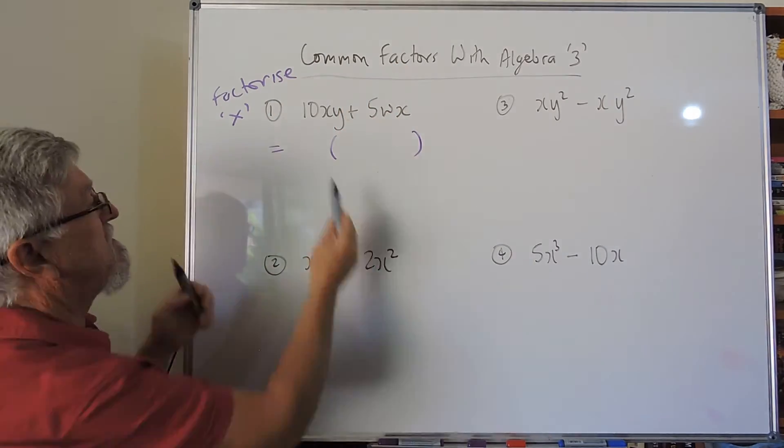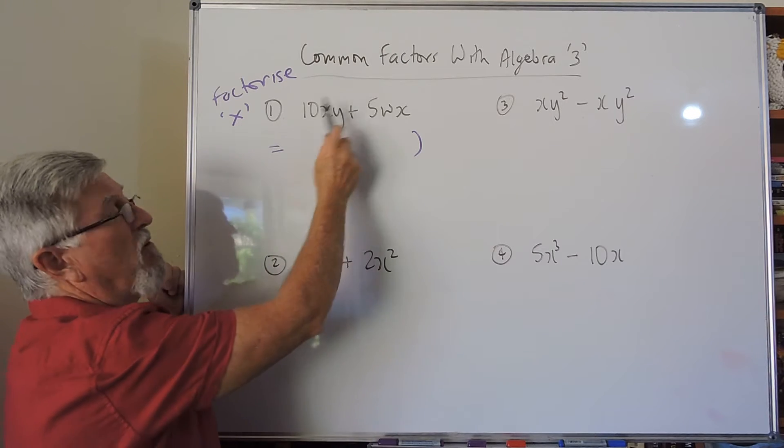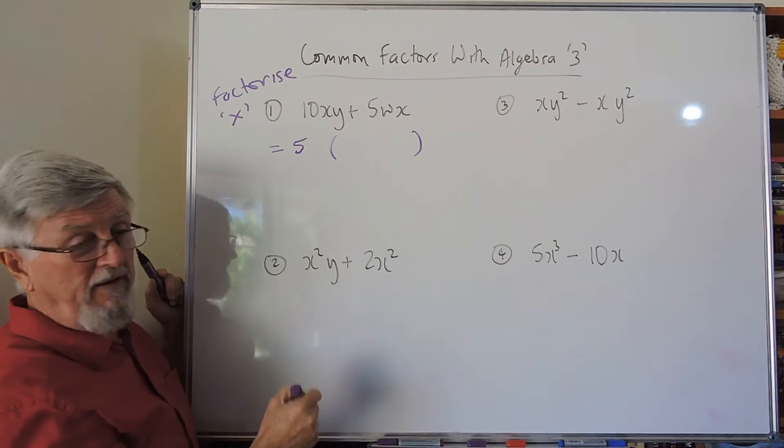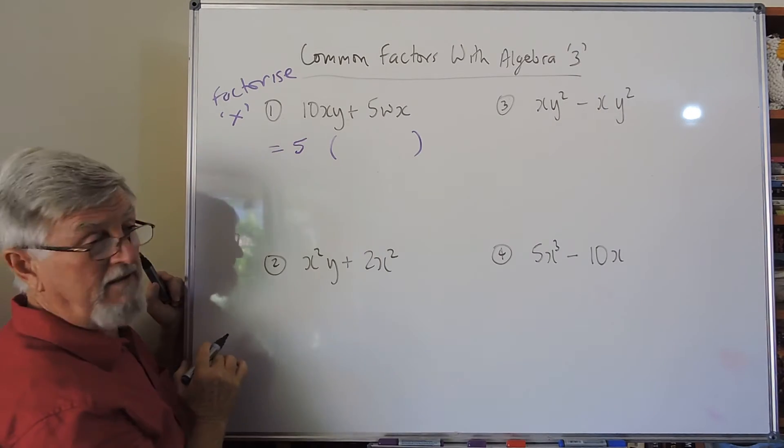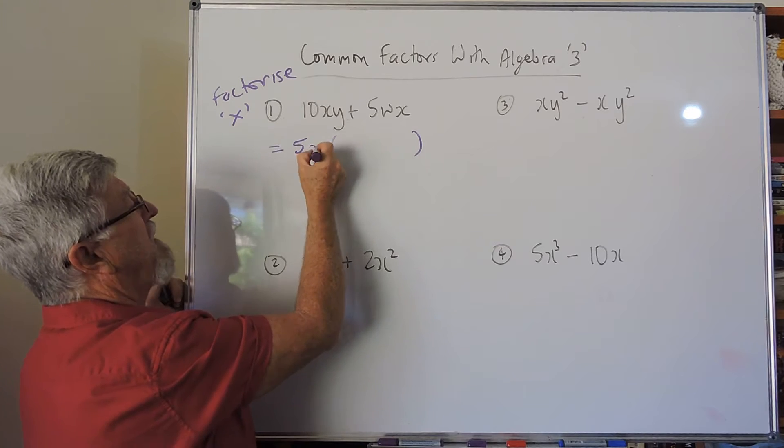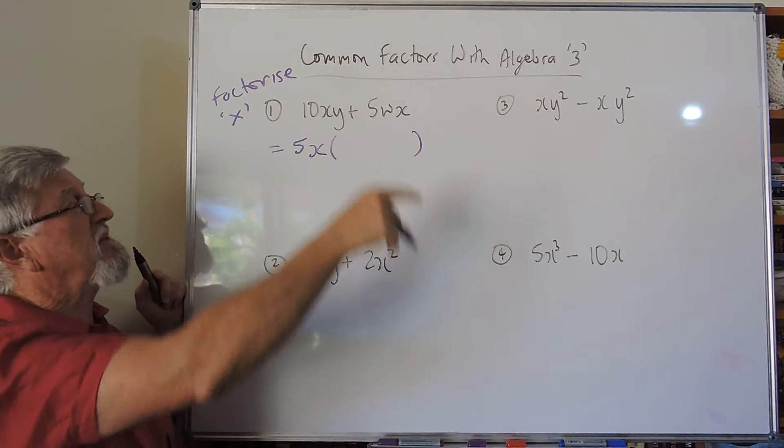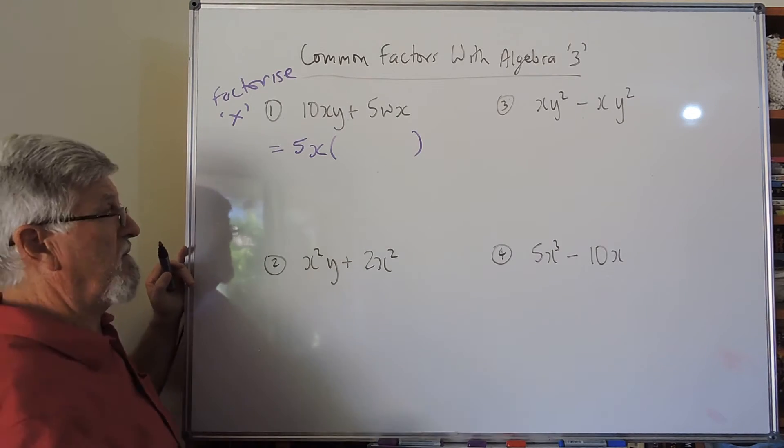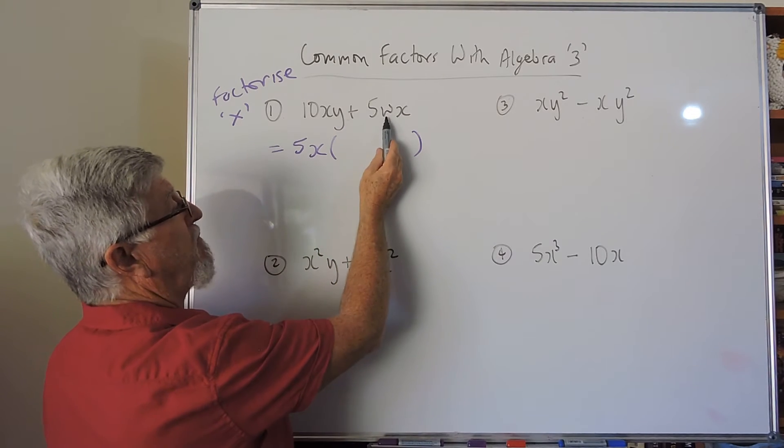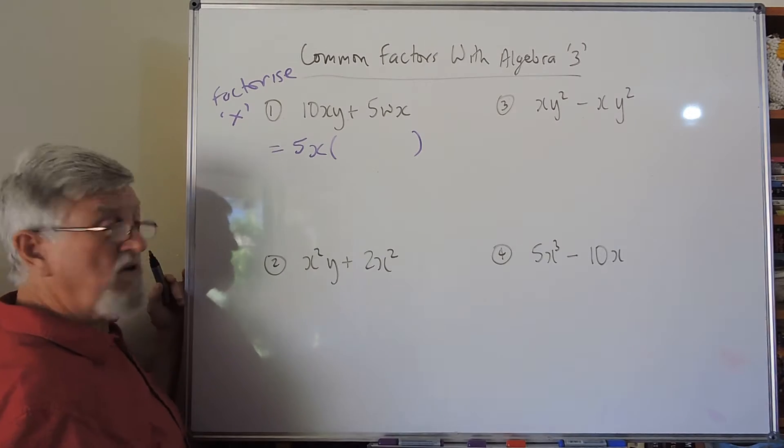There's a five in both of these - they're both multiples of five. I can take a five out of this, I can remove a five out of that. There's an x here and an x here, so I can remove an x out of the first term and out of the second term. The y is only in this one and the w is only in this one.